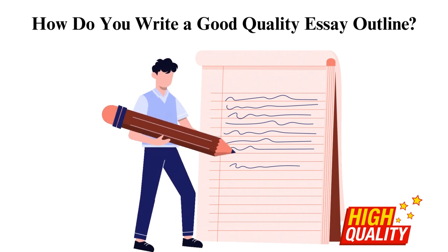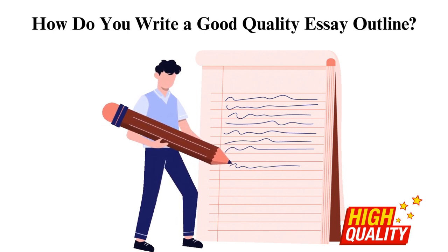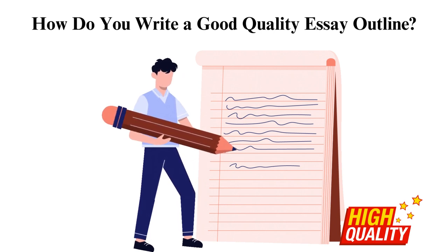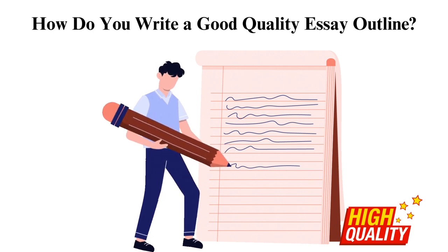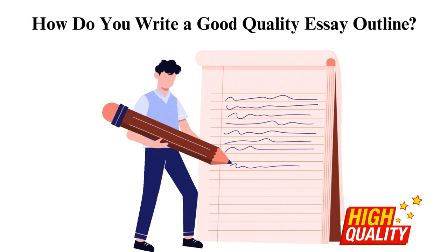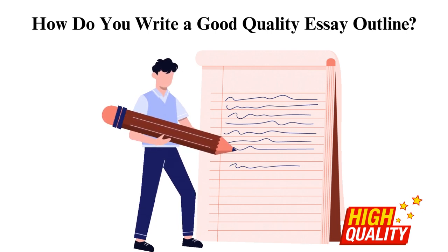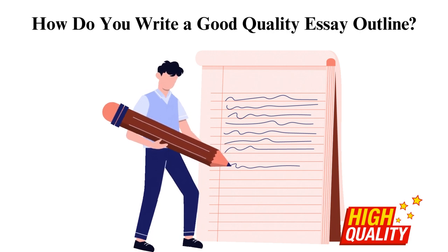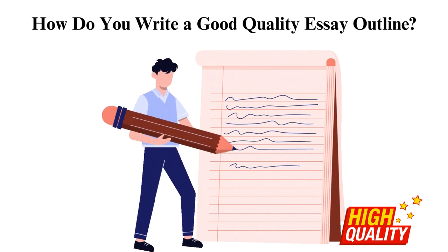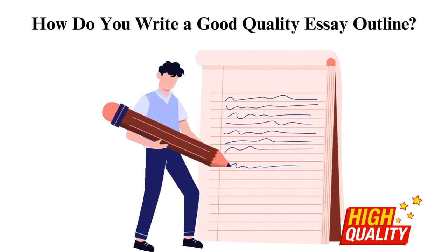The introduction should have a hook and a thesis statement. The body should have key points that you will discuss. For you to write a good outline that will ultimately lead to a quality essay, you should examine what's the purpose of your essay. Is the essay informing, persuading, or inspiring the audience? The answer to this question will direct what kind of thesis you should write. Outline the introduction, write a sentence about your topic, and later, the thesis. You can also add your essay hook, quotes, statistics, rhetorical questions, etc.